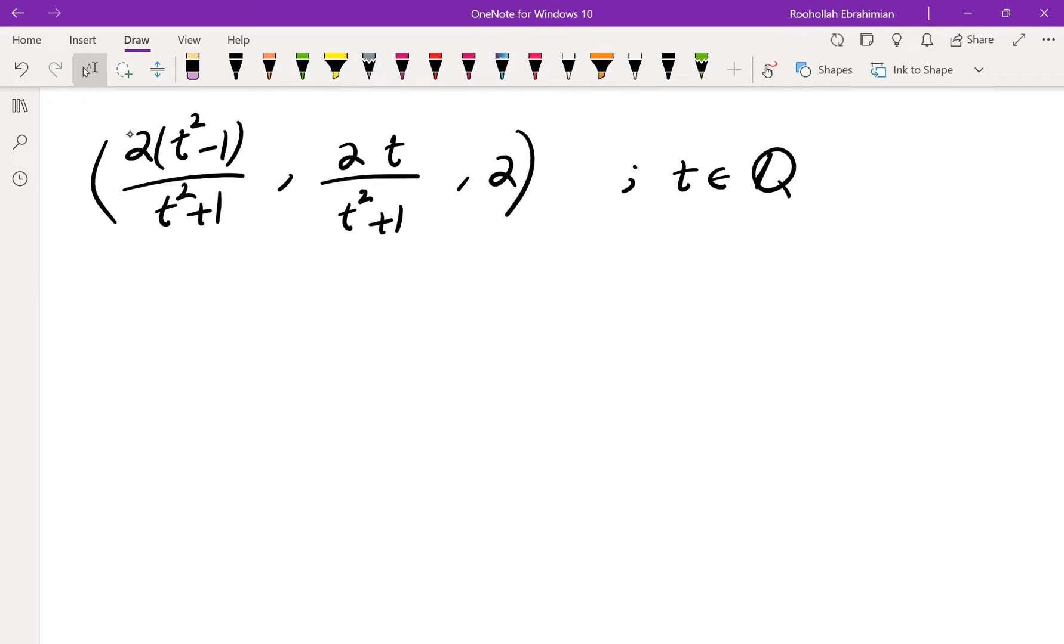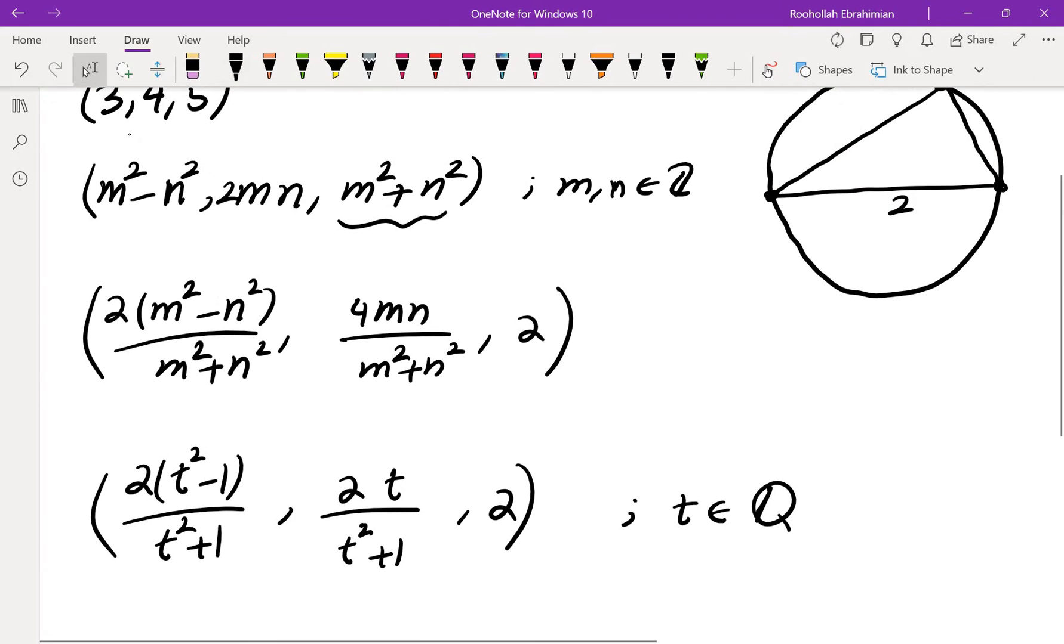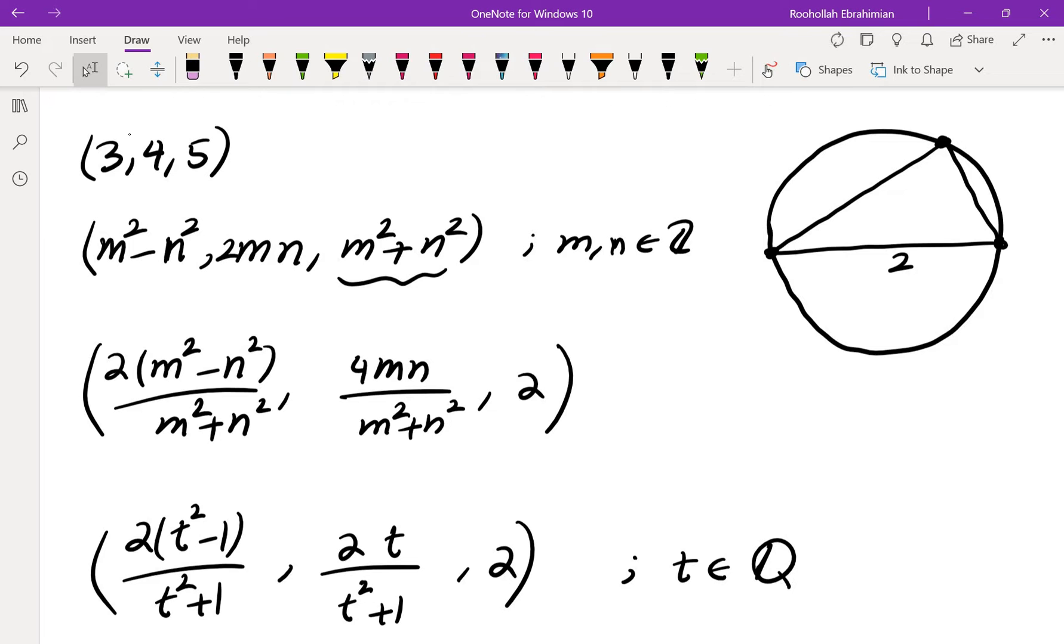Well we can just put all of the hypotenuse, every hypotenuse on the diagonal of this circle, the diameter of this circle.